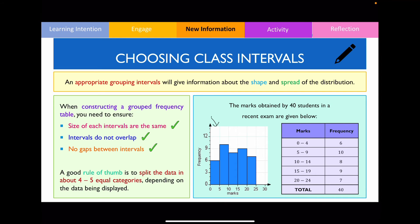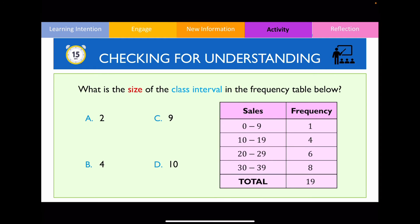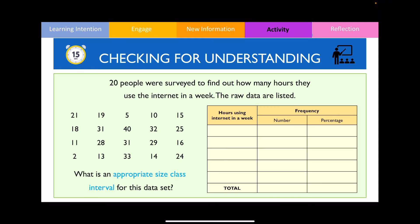Let's answer some questions. First, identify the size of the class intervals in the frequency table below — the answer should be 10. For the next question, choose an appropriate class interval size for the following dataset. The minimum value is 2 and the maximum value is 40. Because we're aiming for four to five class intervals, it makes sense to choose a class interval size of 10.